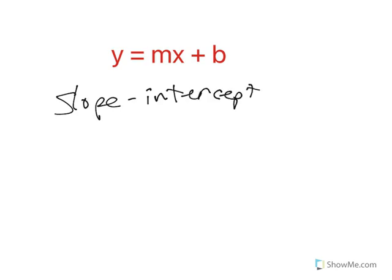We do this because it allows us to identify important information from context and then put it in an equation that would allow us to graph it, make predictions, or use anything else with this linear form.